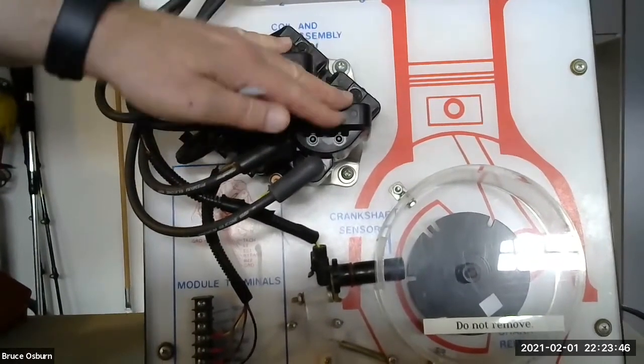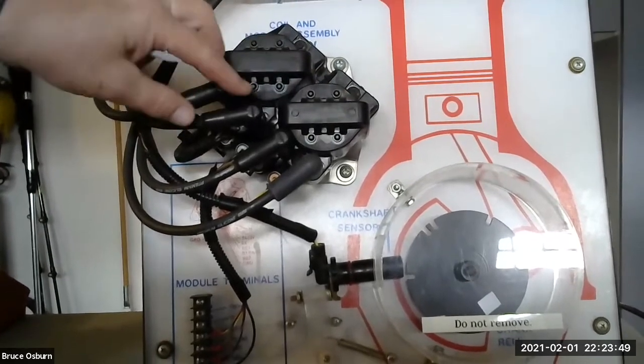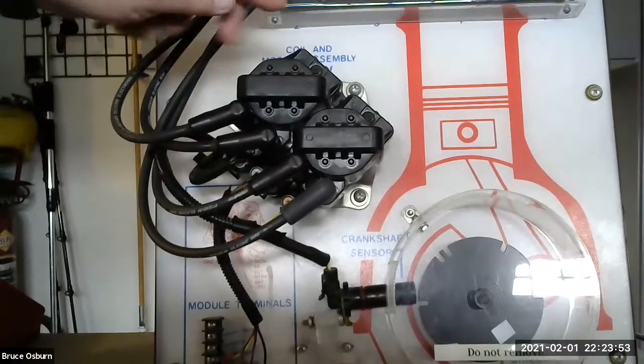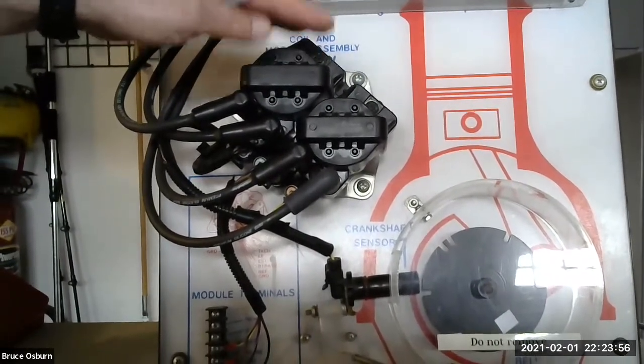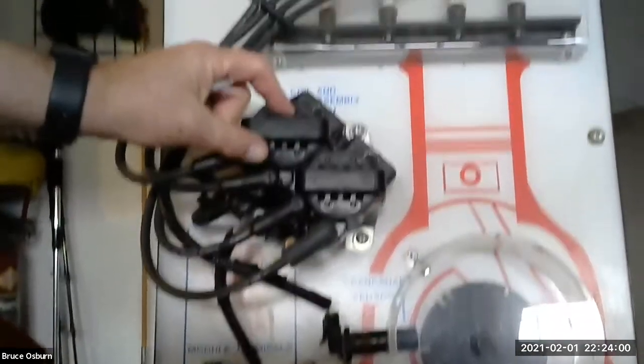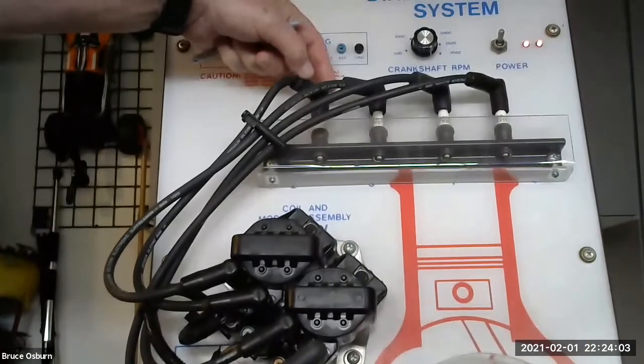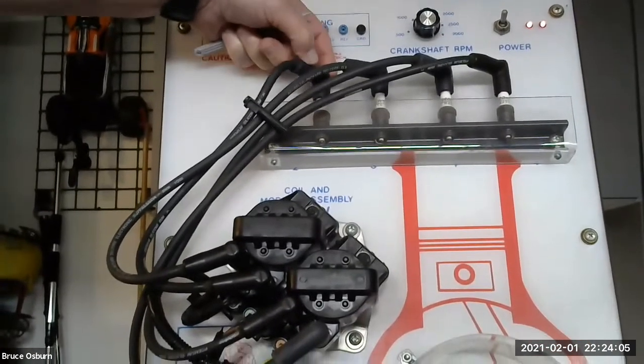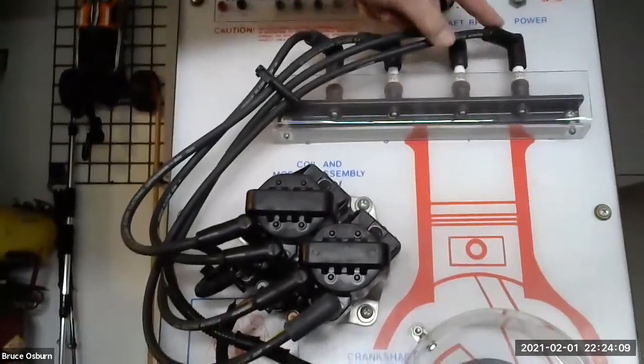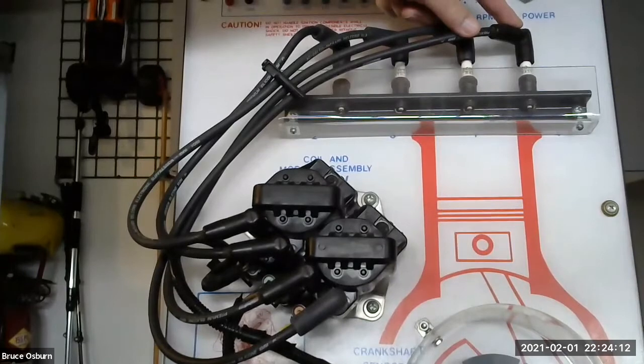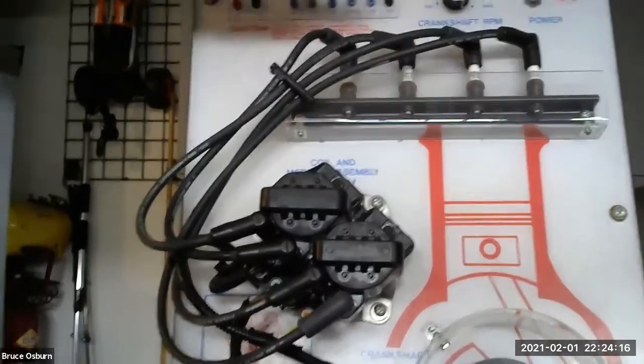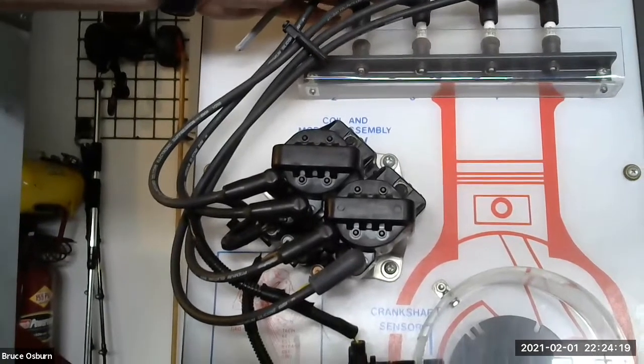In a waste spark ignition system such as this, where the coils spark two spark plugs each time, the ignition work is divided in thirds. If you take the coils and put them directly on top of the plug, now the coil is only responsible for firing one plug, not all four or six or all eight every two revolutions of the engine. So this is why electronic ignition was such an advancement.